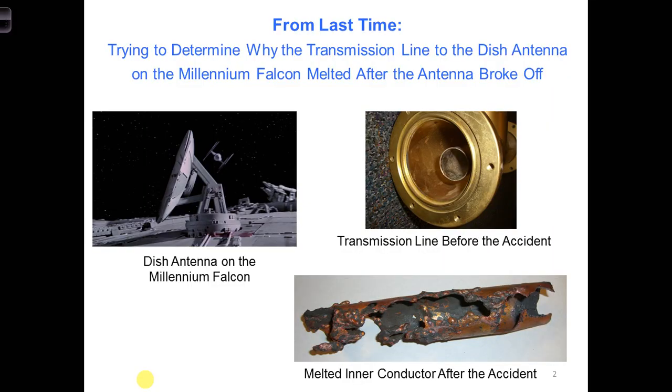We might imagine that when the dish antenna was originally installed on the Millennium Falcon, they installed it in such a way that there would be minimal reflections from the load back towards the generator. This is because they would have wanted the signal from the generator to reach the antenna and be radiated and not be reflected back towards the generator.